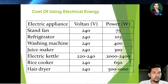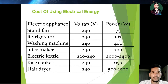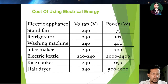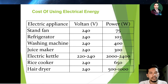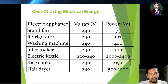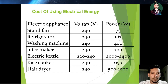For example, electrical appliance number one is a stand fan. The voltage is 240 volts and the power for a stand fan is 75 watts. The washing machine uses the same 240 volts, as does the electrical heater which operates at around 220 to 240 volts, but the power for different electrical appliances varies depending on the type. For example, the washing machine is 400 watts, juice maker 300 watts, electrical heater 2000 to 2400 watts, rice cooker 650 watts, and hair dryer 500 to 1000 watts depending on the brand.